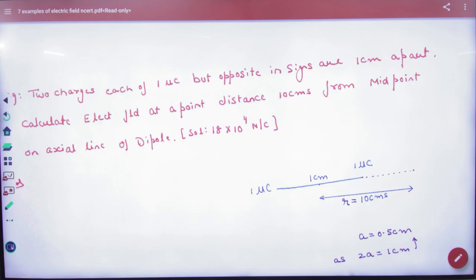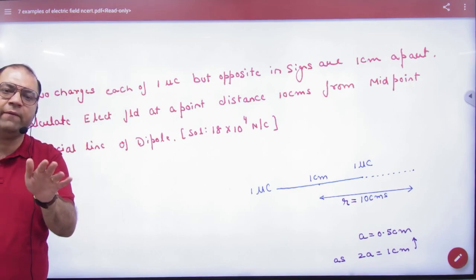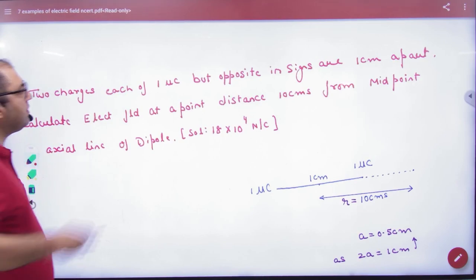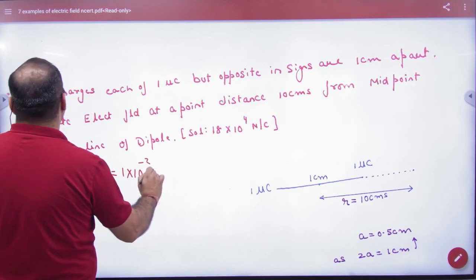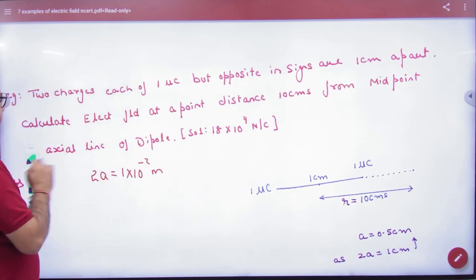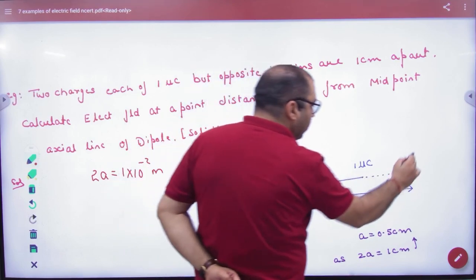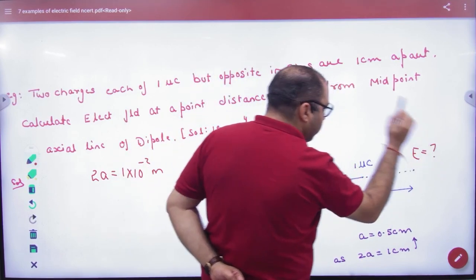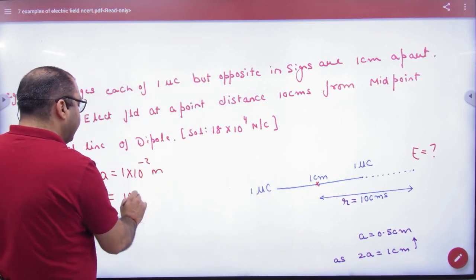There are 2 charges. One micro coulomb charge and the other of opposite sign mentioned. It means q and minus q, which means a dipole. And 1 cm apart. That means 2a value is 1 cm. Calculate electric field at a point distance 10 cm from midpoint on axial line of dipole. So, this is a question from center.